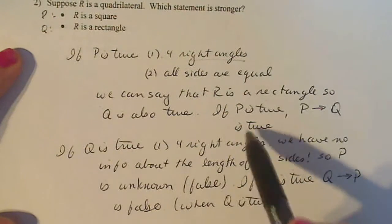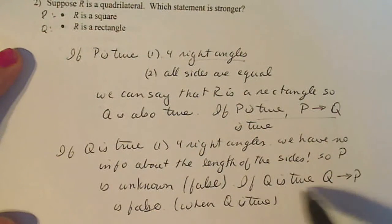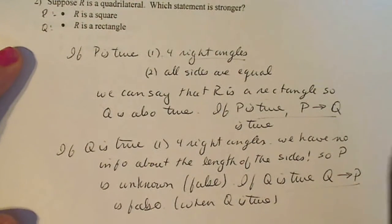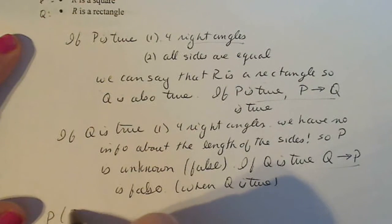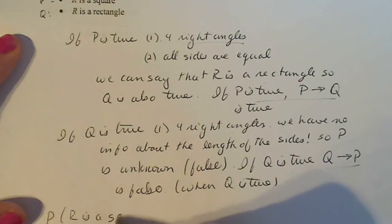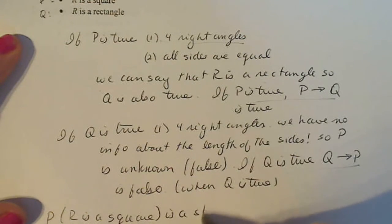So I have P implies Q is true, but Q implies P is false. Therefore, what conclusion that we can make? We can say P being R is a square is a stronger statement.